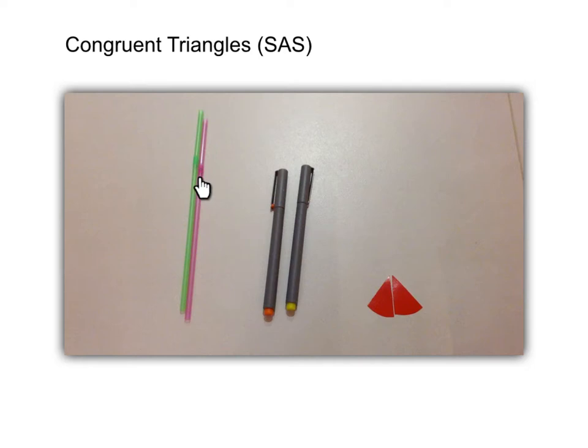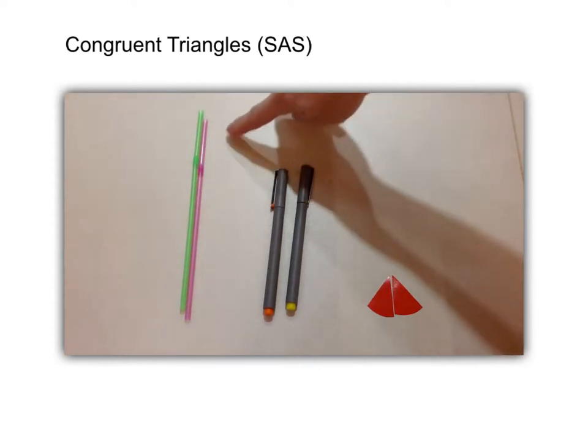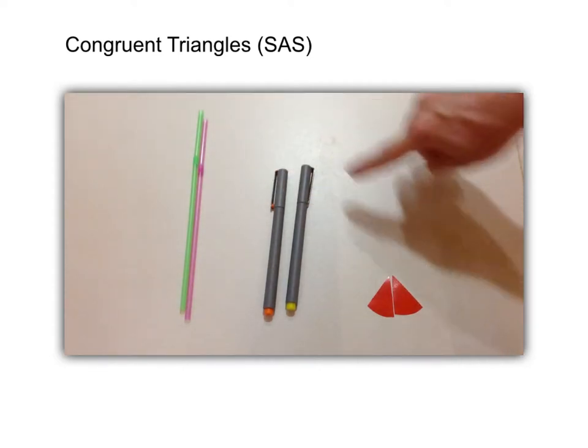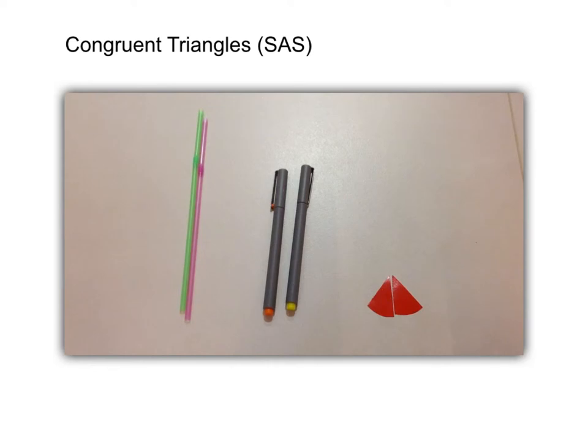Suppose we have two pairs of equal sides and one pair of equal angles. Now we are going to arrange the sides and angles into two congruent triangles under the condition SAS.